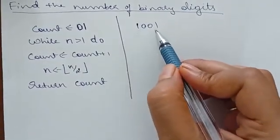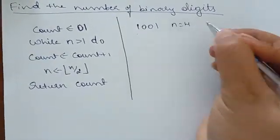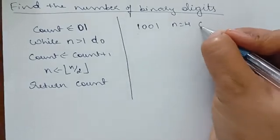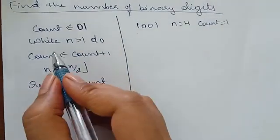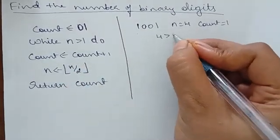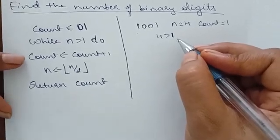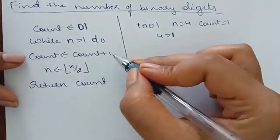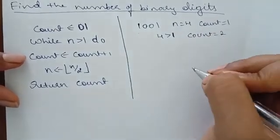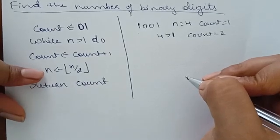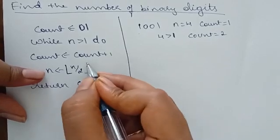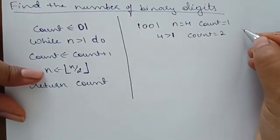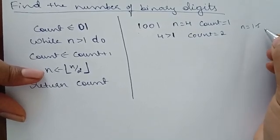Take the example 1001. The value of n is 4. Initially, count equals 1. While n > 1: is 4 > 1? Yes, so we increment count to 2. Then we compute n = floor(n / 2) = floor(4/2) = 2. The flooring function means if a decimal value results, we round down to the previous integer.